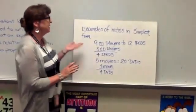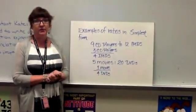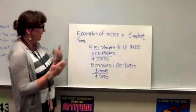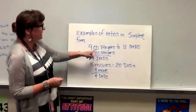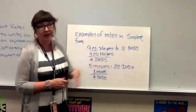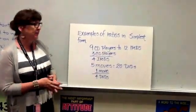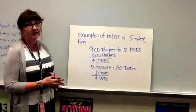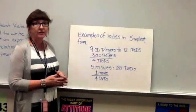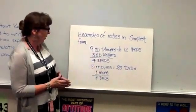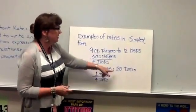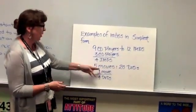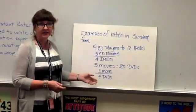The next part on your notes are some examples of ratios in simplest form. So the first item we have is there's nine CD players to 12 iPods. Putting that in simplest form, you should have three CD players to four iPods. Or you have five movies to 20 DVDs. In simplest form, that's one movie to four DVDs.